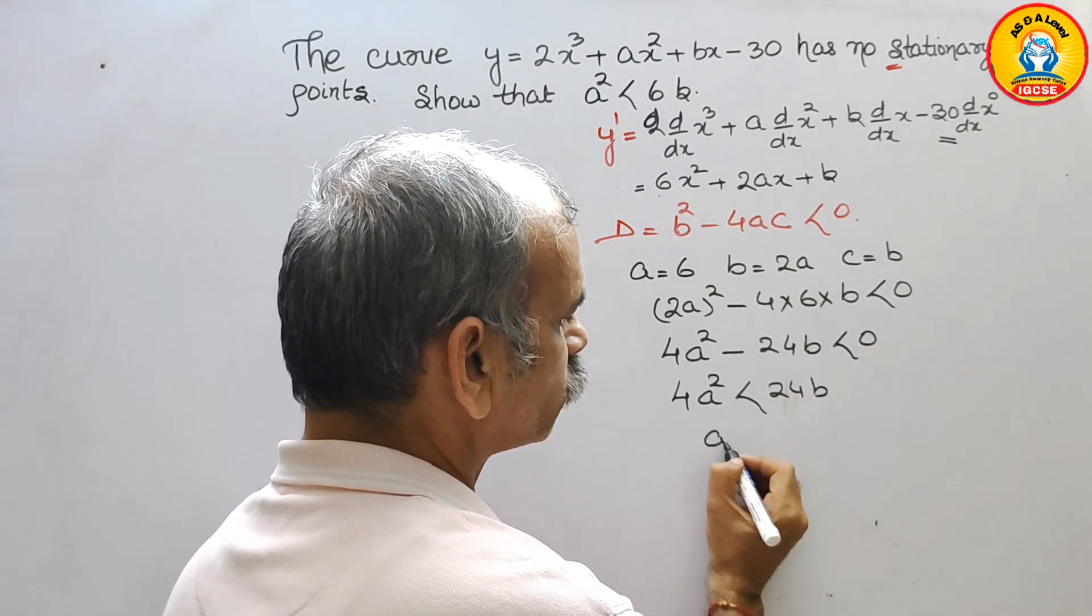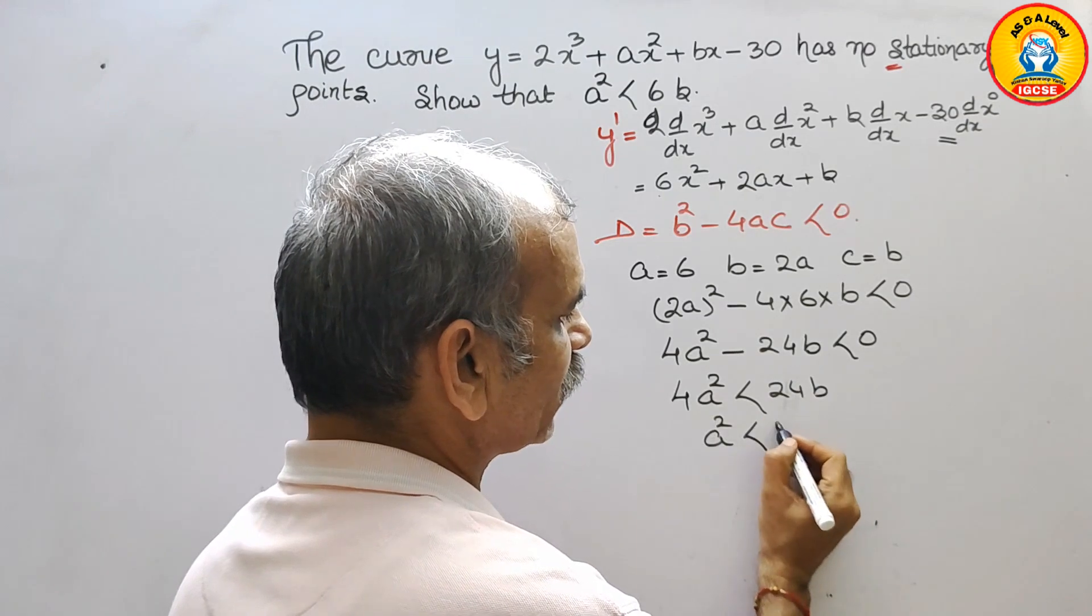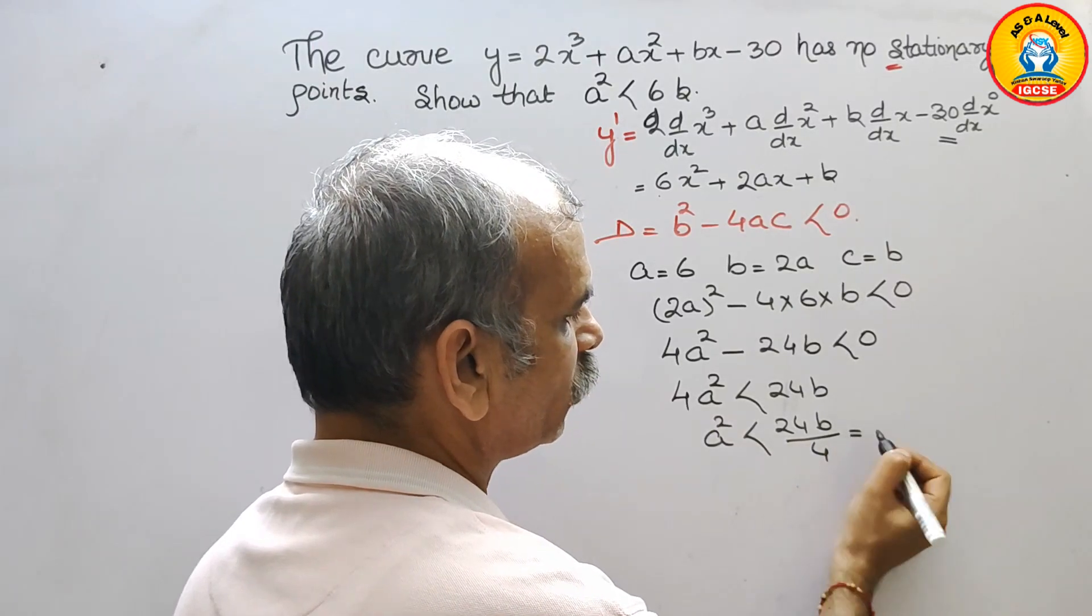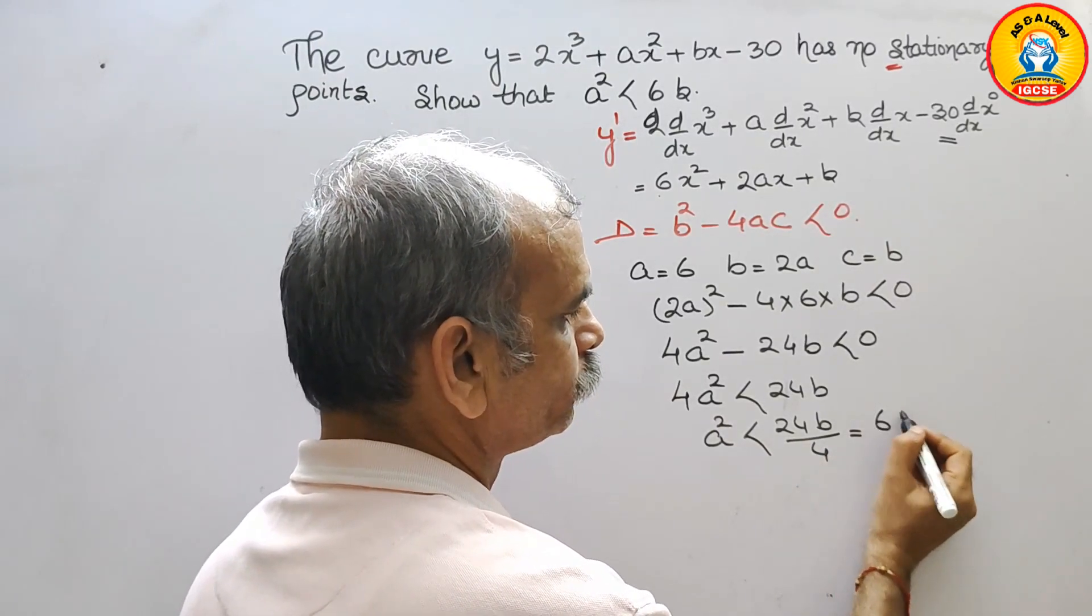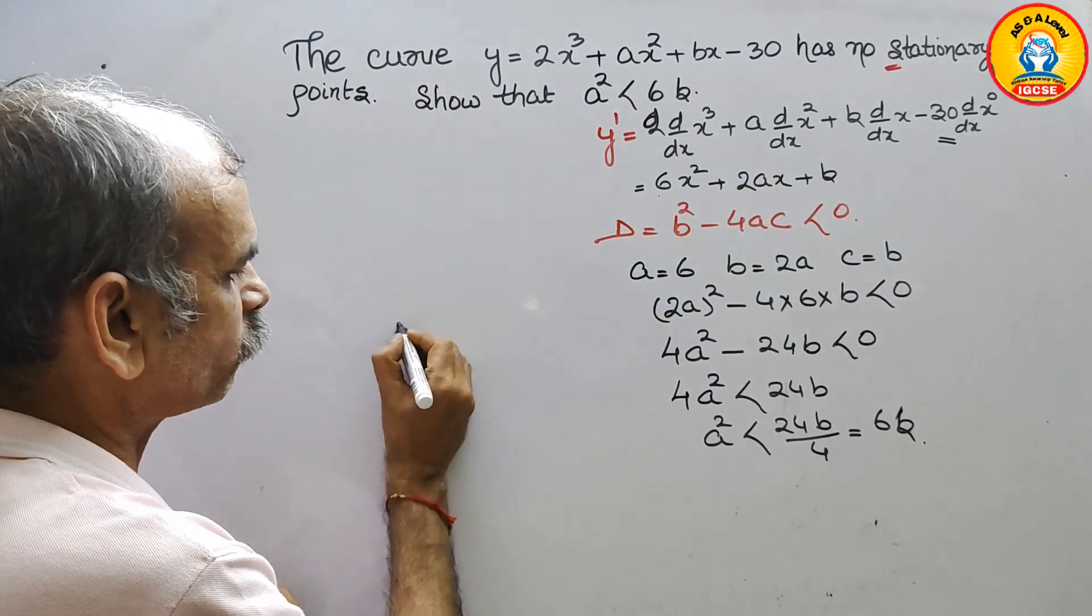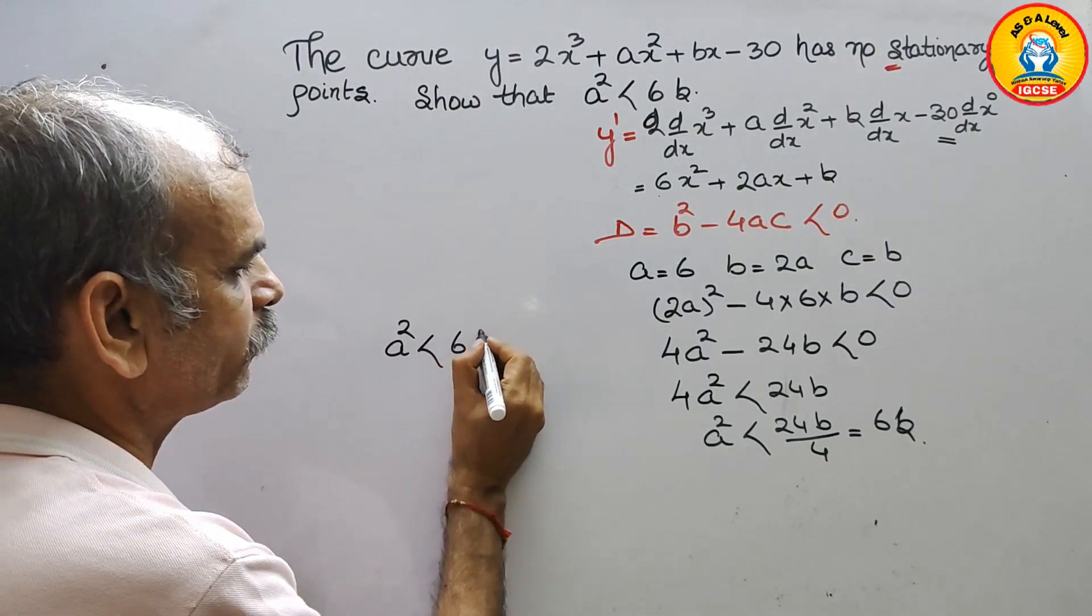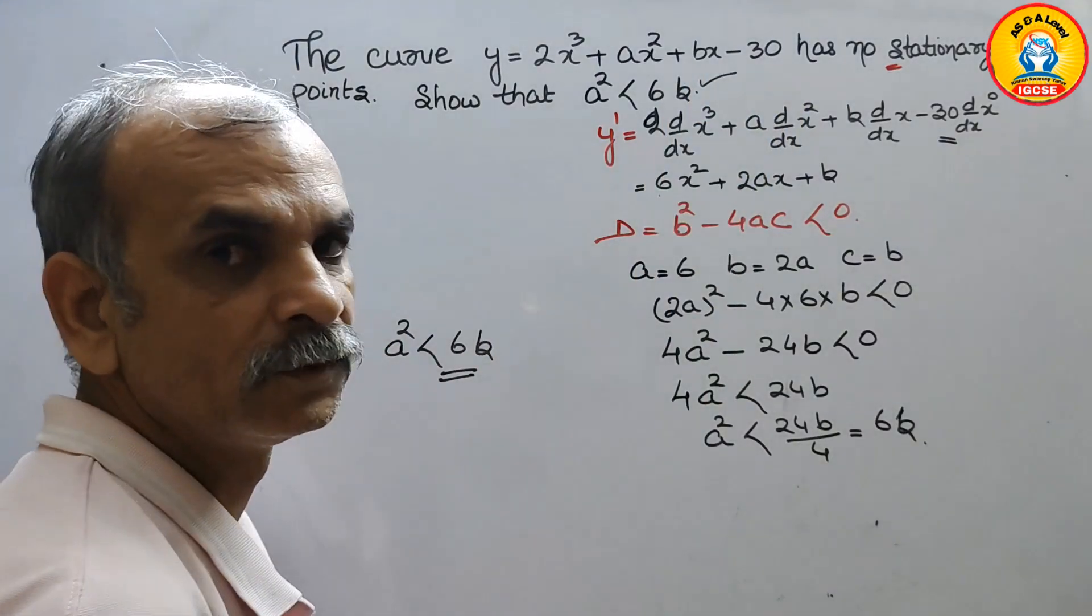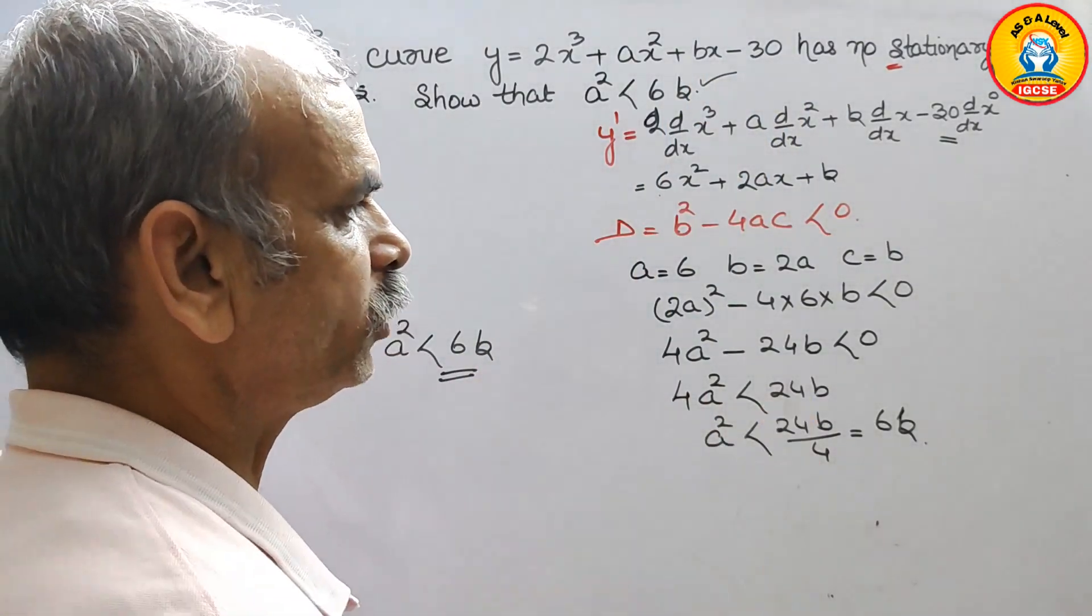So what is your a²? We can say a² is less than 24b by 4, that is equal to 6b. So now our equation we will get a² is less than 6b. That only we have to find it out here. So like this we have to do it.